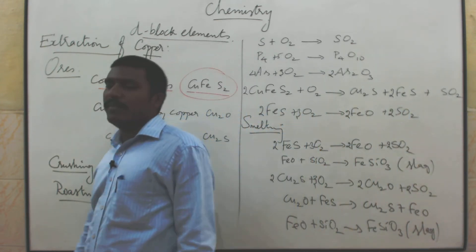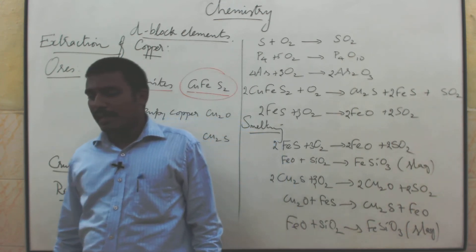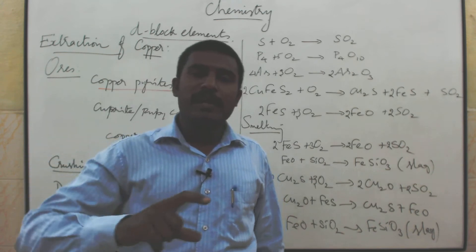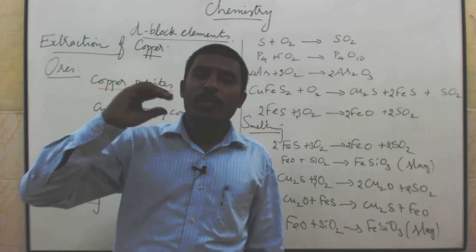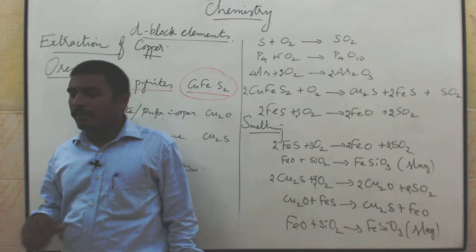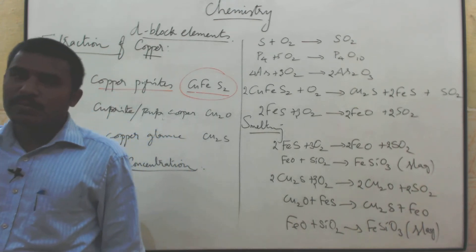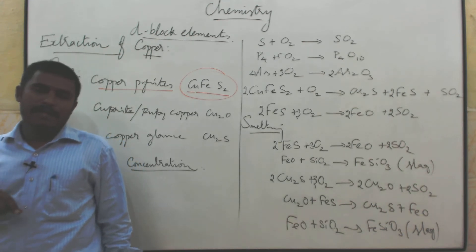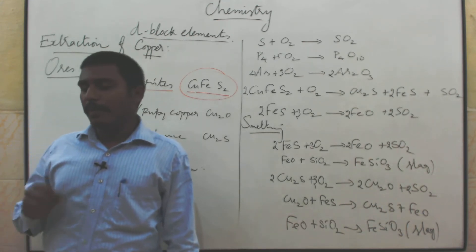What is slag? FeSiO₃ is the fusible slag. Finally, you will get two layers at the bottom of the furnace. The top layer is the lighter, molten layer named as slag. The bottom layer is named as matte — M-A-T-T-E.